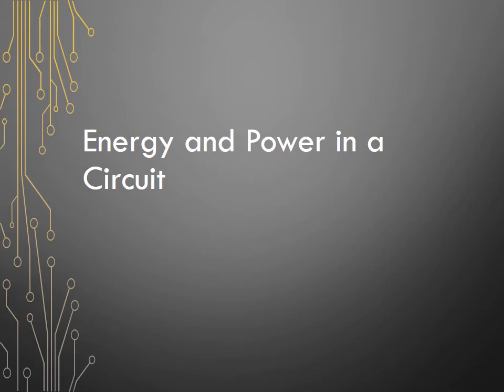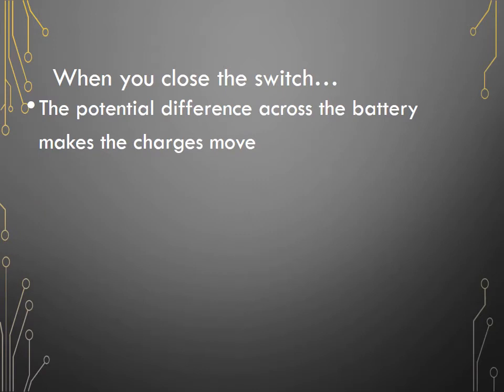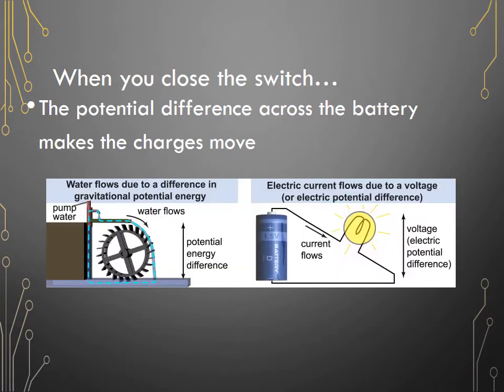Energy and power in a circuit. So when you close the switch at a circuit, you make it a complete circuit, and the potential difference across the battery makes the charges move. We've already talked about this.